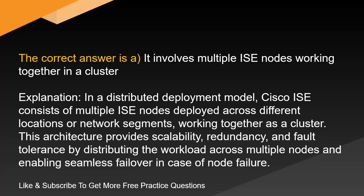Explanation. In a distributed deployment model, Cisco ISE consists of multiple ISE nodes deployed across different locations or network segments, working together as a cluster. This architecture provides scalability, redundancy, and fault tolerance by distributing the workload across multiple nodes and enabling seamless failover in case of node failure.